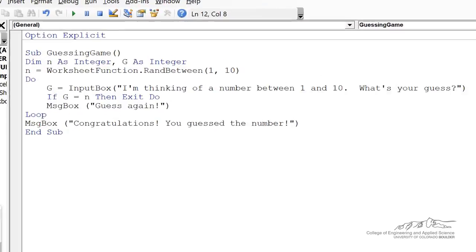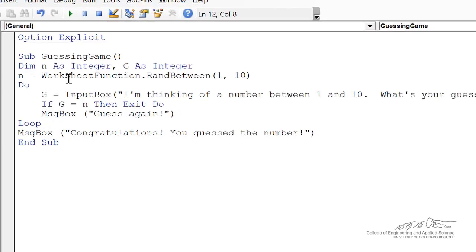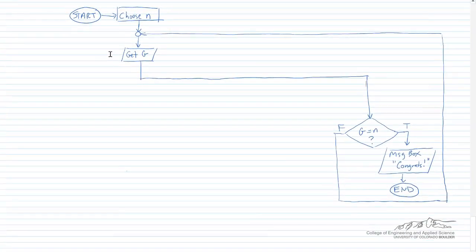I already had a guessing game sub, where the program chooses a random number N. We then ask the user for a guess between 1 and 10, and it keeps going until the user guesses N. The flowchart for that is shown here. Just by noticing the space available on this flowchart, all the wide open space, you can imagine we're going to make some improvements to this.